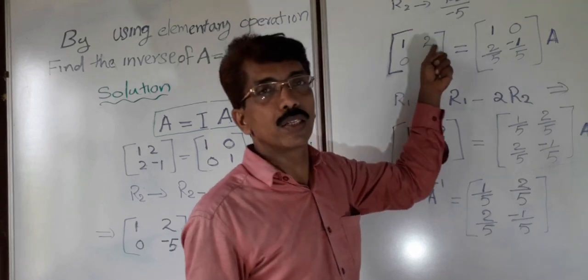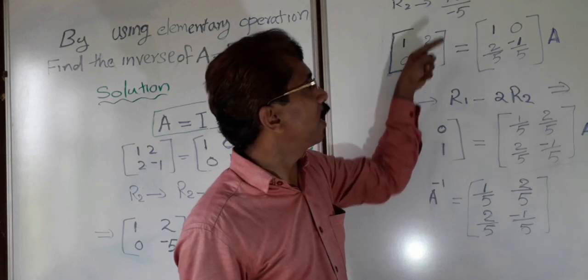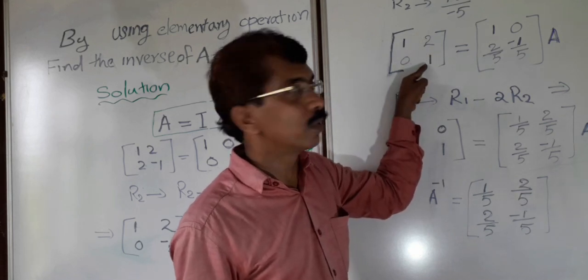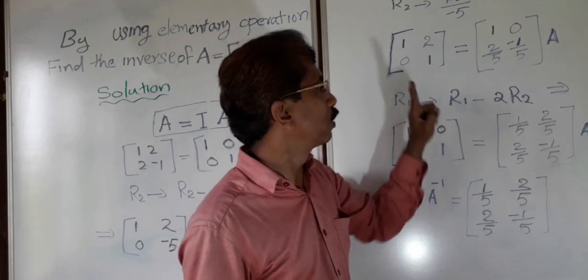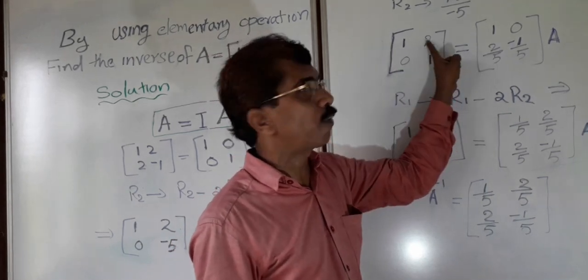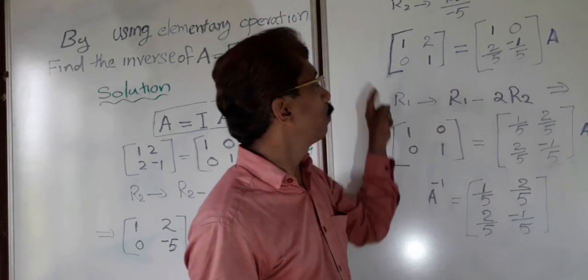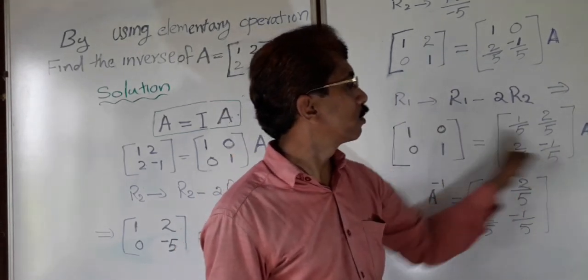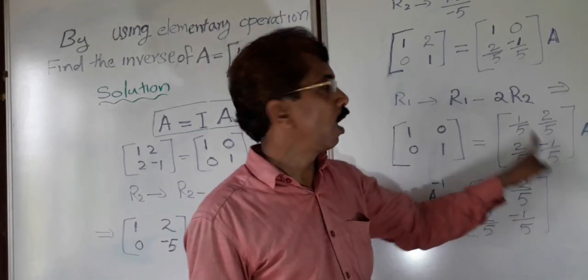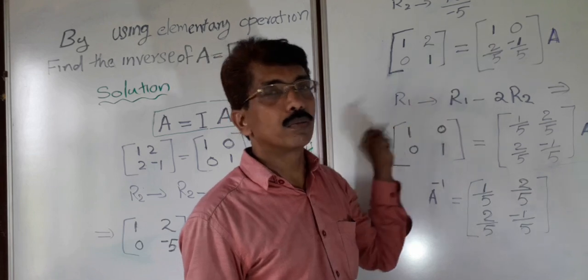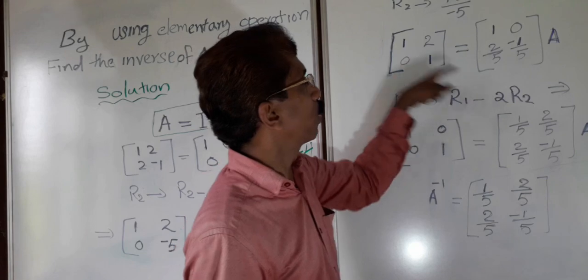Next, I have to make this 2 as 0. This 2, how to make 0? 2 minus 2 into 1 gives 0. This is an element from R1. R1 changes to R1 minus 2R2. So R2 never changes, R2 stays the same. R1 only changes. R1 changes to R1 minus 2R2.